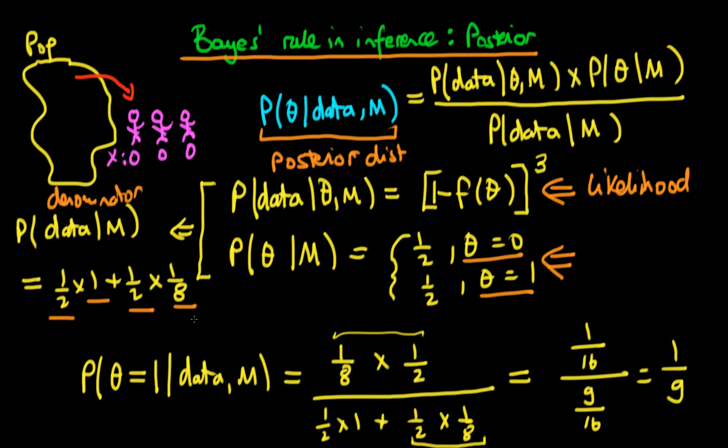So this is the posterior distribution, or the probability that theta is equal to one given our data. And because the posterior distribution is also a probability distribution, that tells us that the probability that theta is equal to zero, given our data and given our model choice, is just going to be one minus one-ninth, which is just going to be eight-ninths.